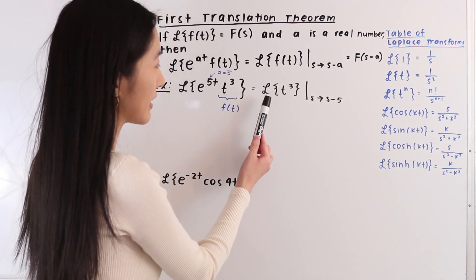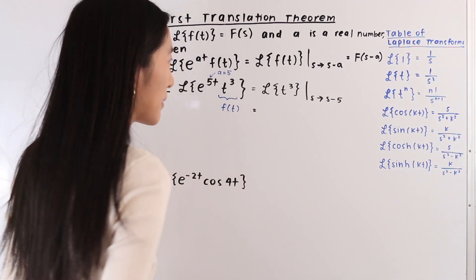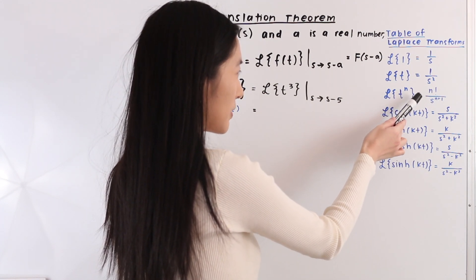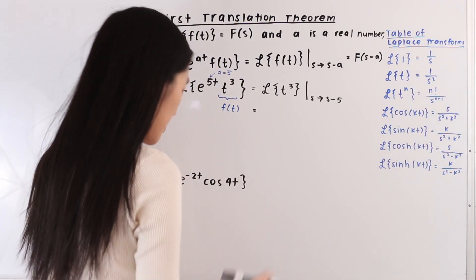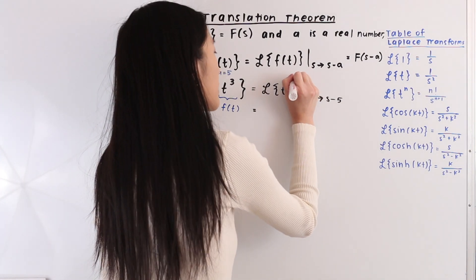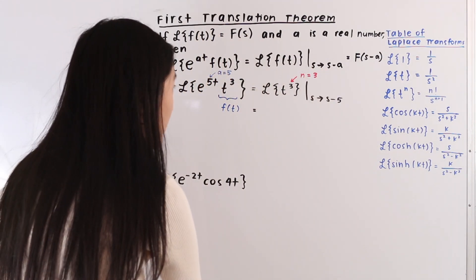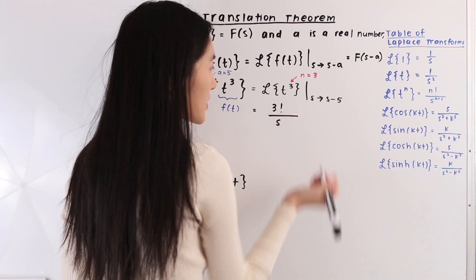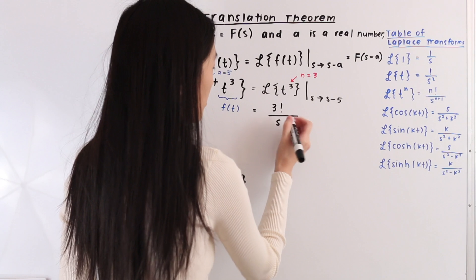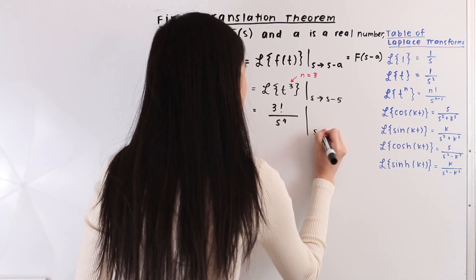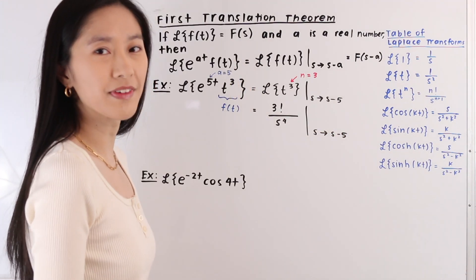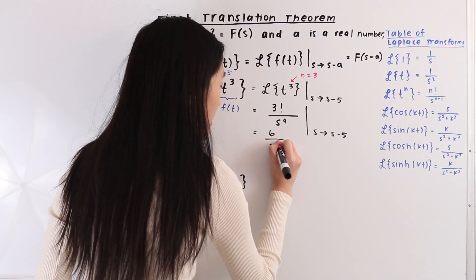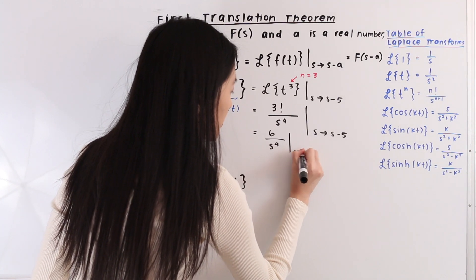Next we evaluate the Laplace transform of t to the third power. Going to our table, we see that the Laplace transform of t to the n is equal to n factorial over s to the n plus 1. Here n equals 3, so we have 3 factorial divided by s to the 3 plus 1, which is s to the fourth, with a shift from s to s minus 5.